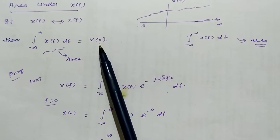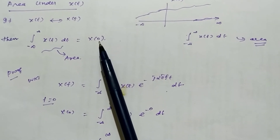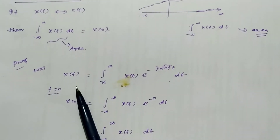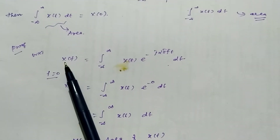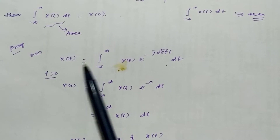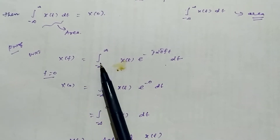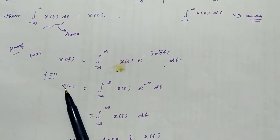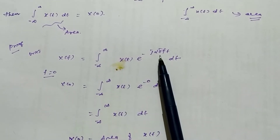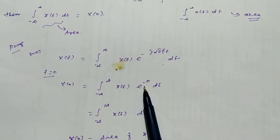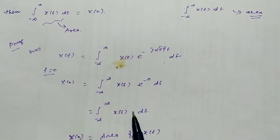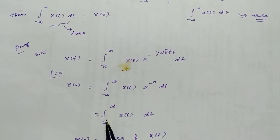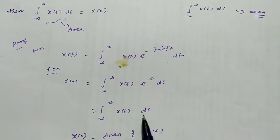When we replace f by 0, we will get the result — that result is nothing but the area of the given signal. Let us prove this. We know that the general formula for a Fourier transform is X(f) equal to the integral of x(t) e to the power of something. So if you put f equal to 0 here, X(0) equals the integral, with limits plus or minus infinity, and e to the power 0 equals 1, so we get the integral of x(t).